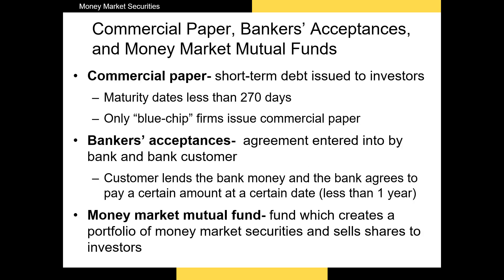Now let's talk about some other money market securities. First, we have commercial paper, which is the short-term debt of blue-chip companies. Blue-chip companies are companies seen as industry leaders and well-known brands — examples include Coca-Cola, Berkshire Hathaway, and Apple. Commercial paper is issued by these firms to fund short-term cash shortfalls.